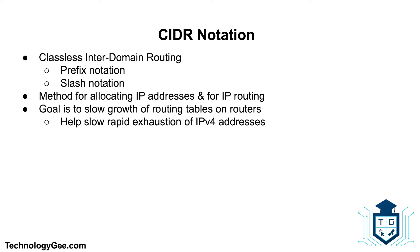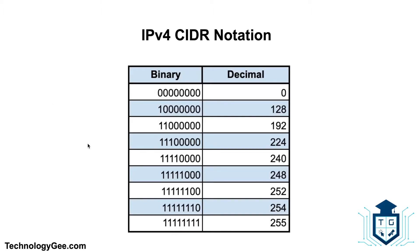CIDR stands for Classless Interdomain Routing. It's also known as prefix notation or slash notation, and it's a method for allocating IP addresses and for IP routing. CIDR notation was introduced in 1993 to replace the previous classful network addressing architecture. Its goal was to slow the growth of routing tables on routers and to help slow the rapid exhaustion of IPv4 addresses, since there's only a finite number of them and we've pretty much run out, which is why we switched over to IPv6.